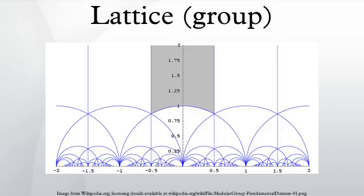Regarding symmetry considerations and examples: a lattice is the symmetry group of discrete translational symmetry in n directions. A pattern with this lattice of translational symmetry cannot have more, but may have less symmetry than the lattice itself. As a group, a lattice is a finitely generated free abelian group, and thus isomorphic to ℤⁿ.